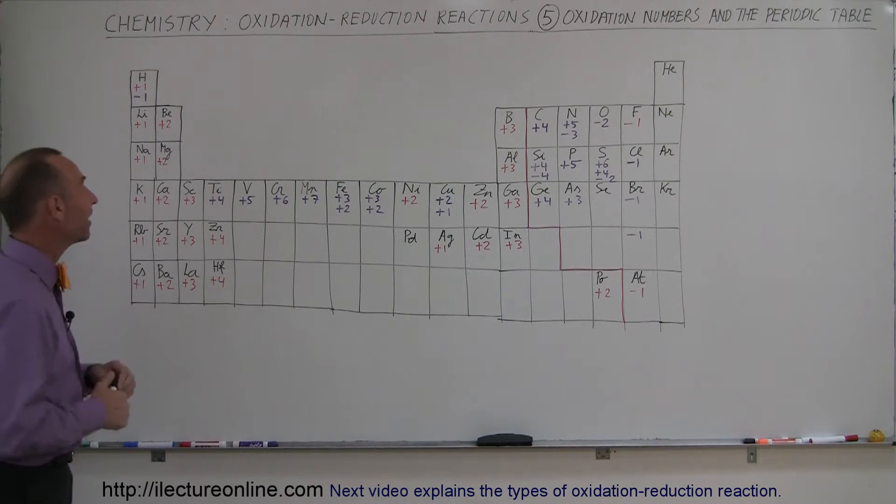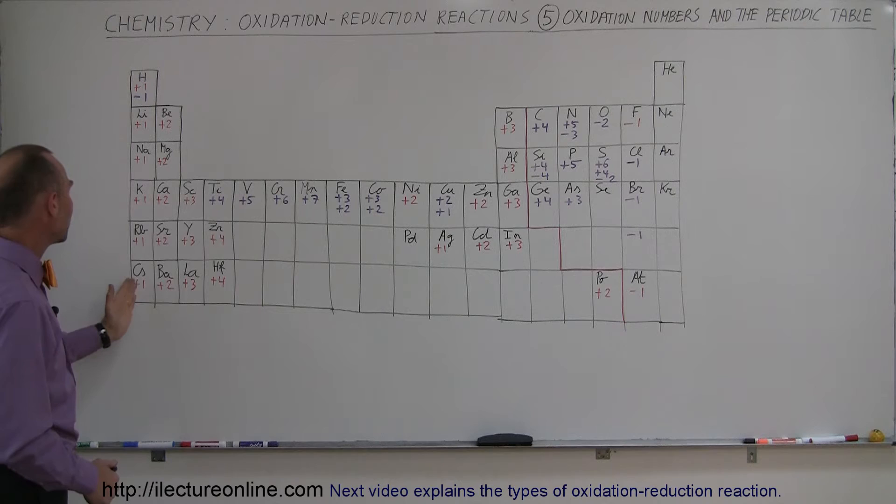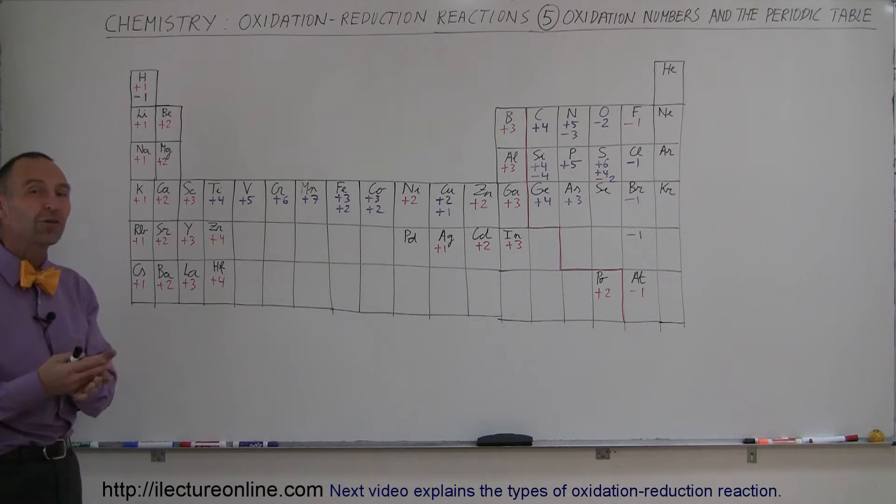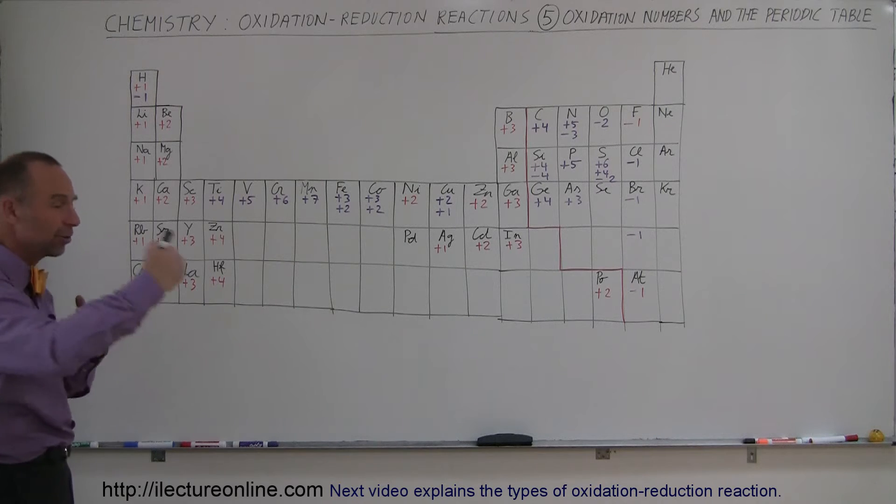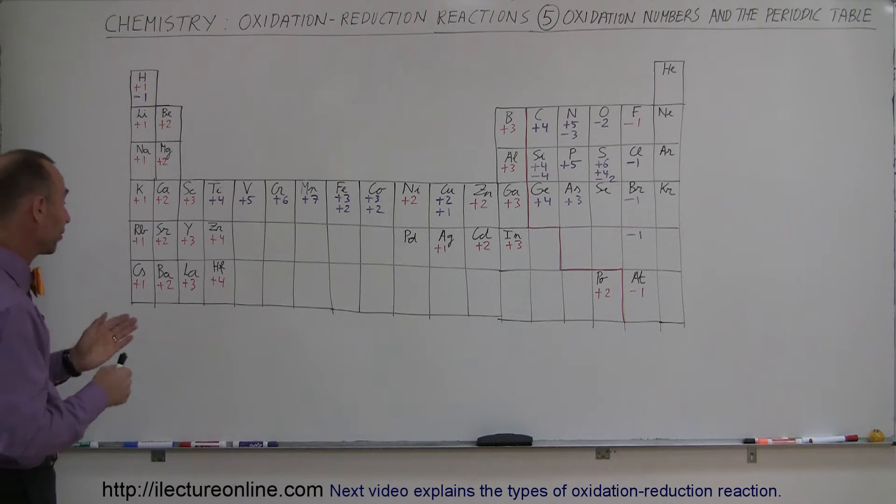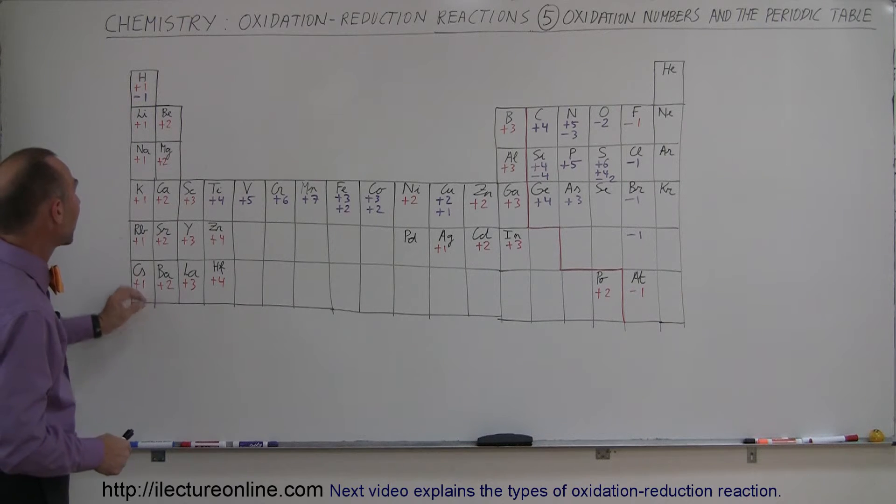So if you take a look at the alkali metals, notice that the entire column here, the only oxidation state can be plus one. That is because those elements are very likely to donate one electron, very unlikely to get one electron back, very unlikely to donate two electrons because there's only one valence electron in its valence band.